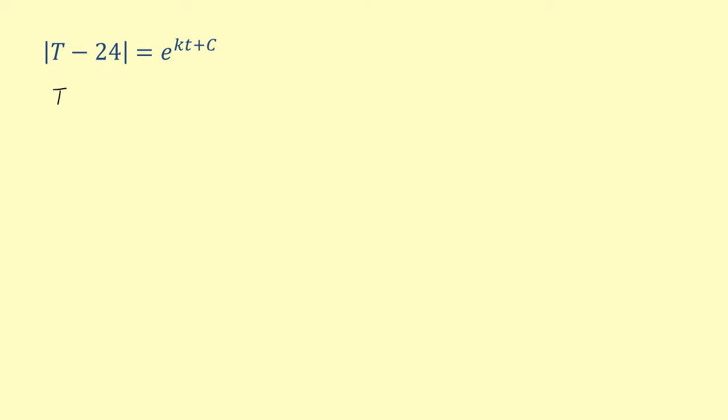We can get rid of the absolute value by redefining the constant c as c sub 1. This gives us an equation for capital T of t, which equals 24 plus c sub 1 times e to the kt.